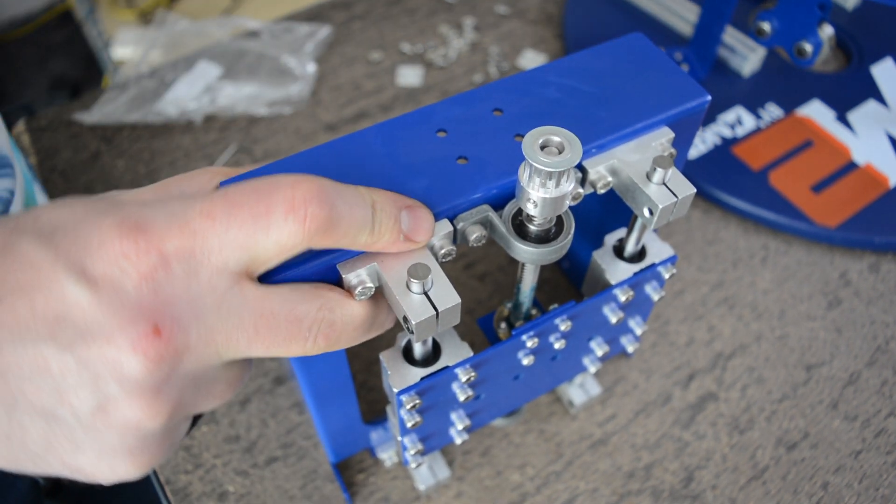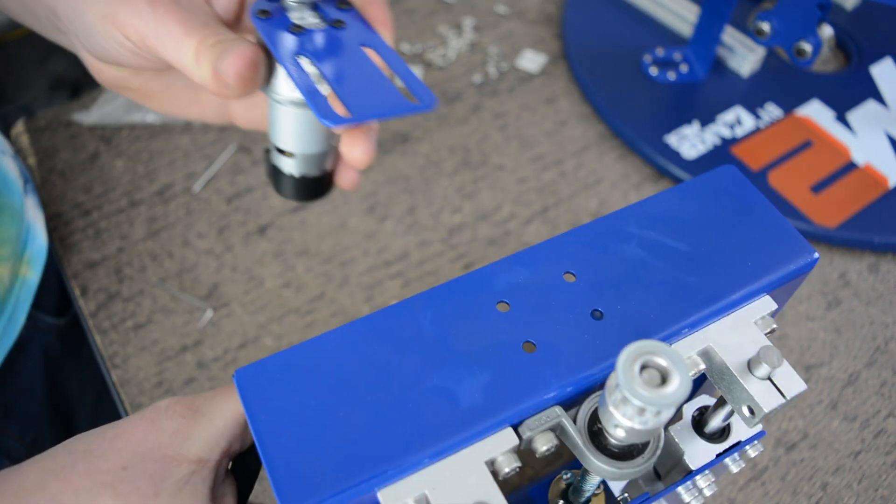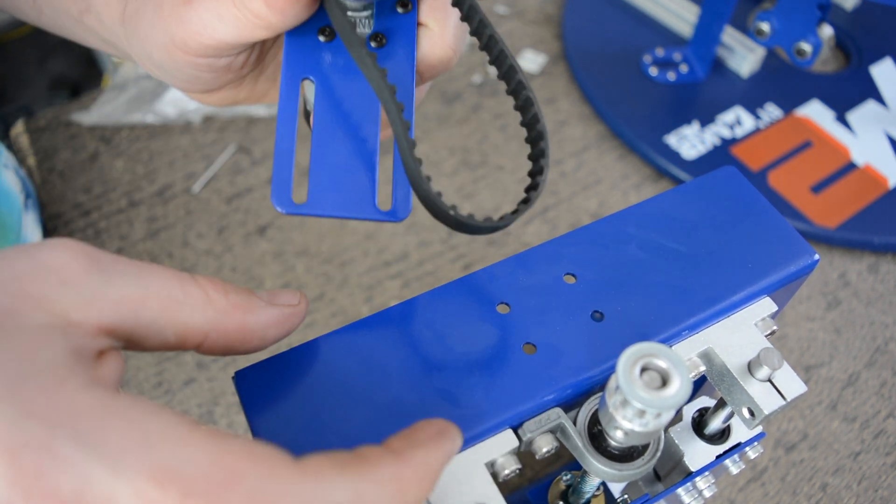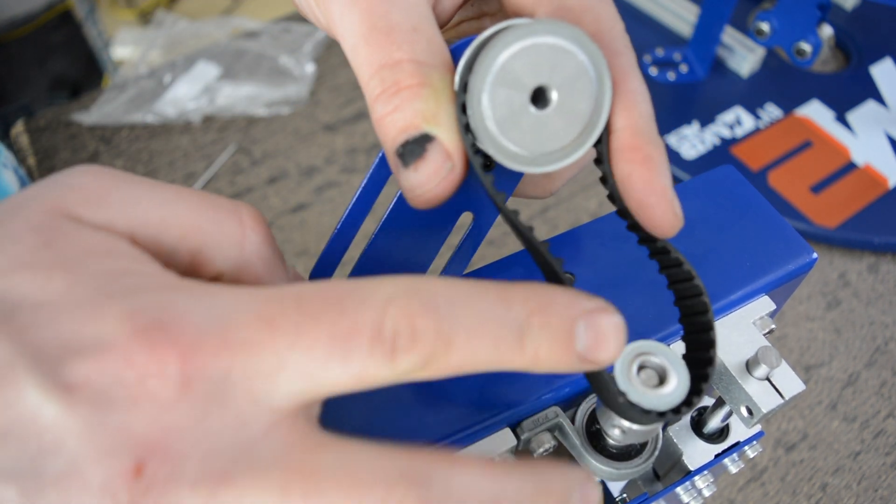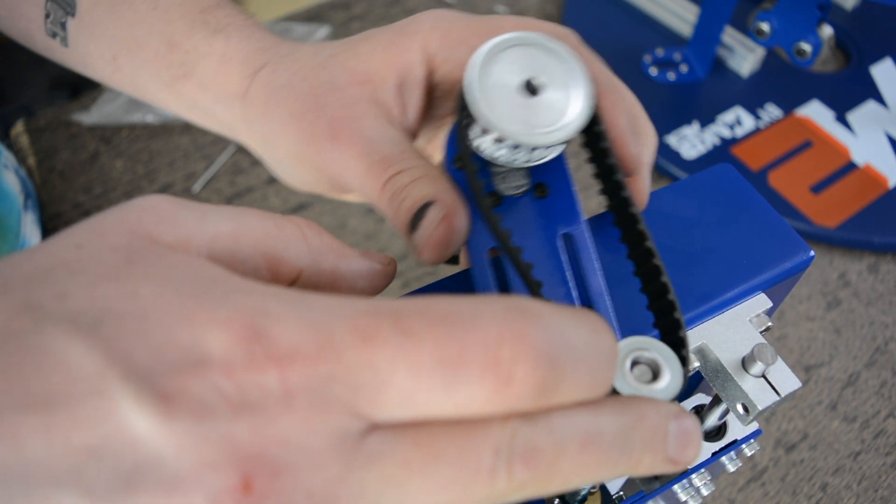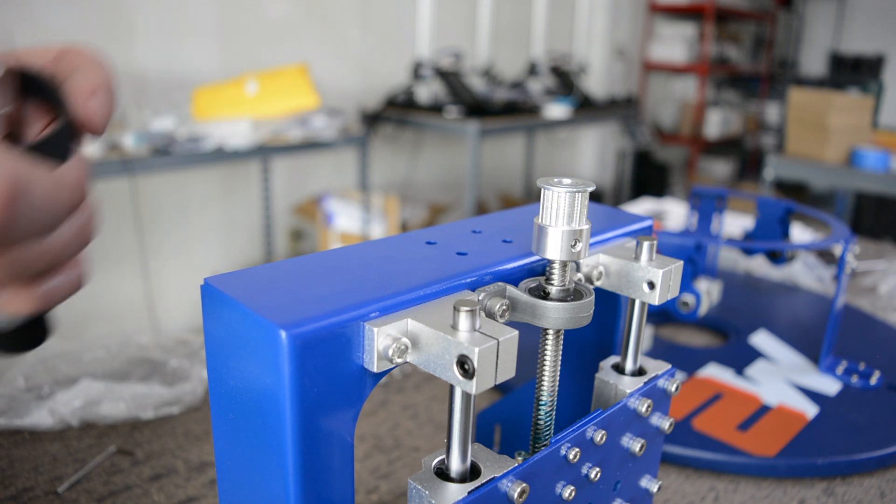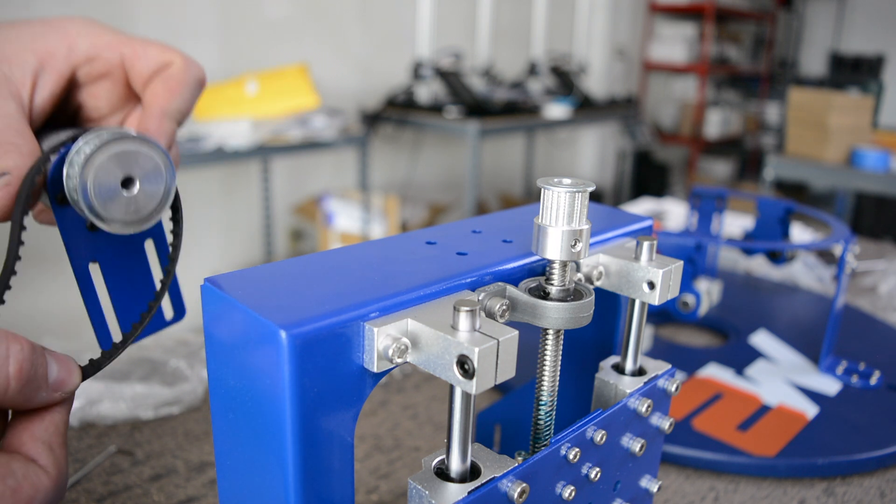We're going to take the belt and our z-axis motor and loop the belt around the large gear and then around the small gear, and pull it down until the z-motor bracket is flat against the top of the assembly. Here's another shot from a different angle to show you what we're doing and how we want to loop it on there.